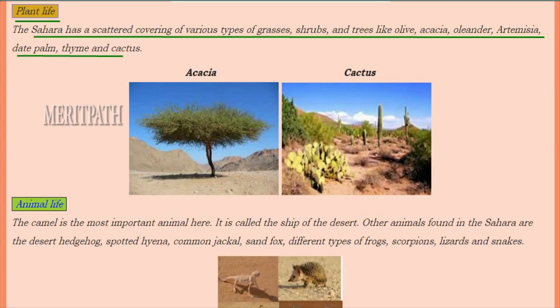The plant life in the Sahara has various scattered cover of different types of grasses, shrubs, and trees such as olive, acacia, oleander, artemisia, date palm, thyme, and cactus.